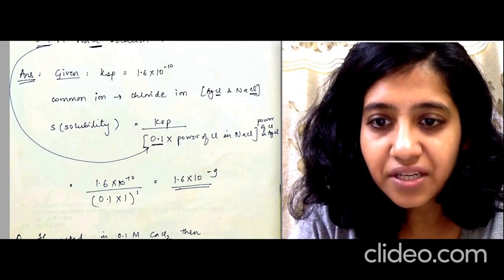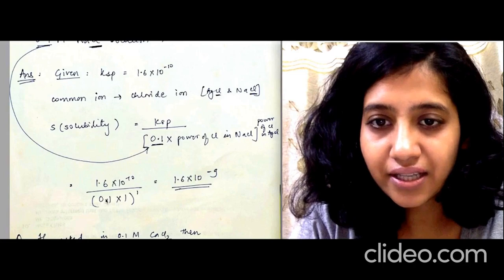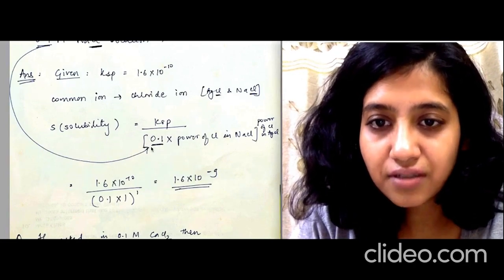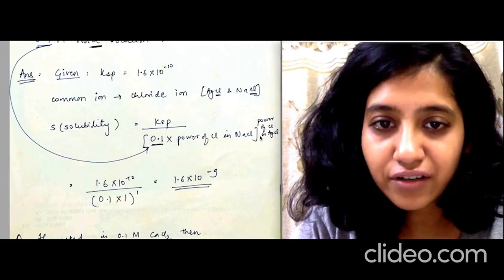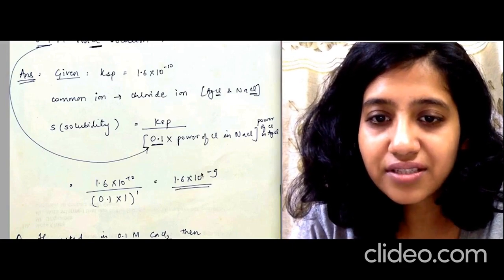Here 1.6×10⁻¹⁰ because this was the Ksp, divided by 0.1 because this is the concentration of NaCl that they have added. This is the power of Cl in NaCl. Always remember: this is the concentration of NaCl, this is the power of Cl in NaCl that is 1, raised to power 1 because AgCl has 1 here.